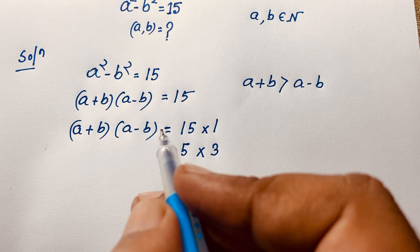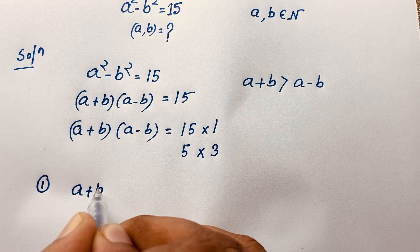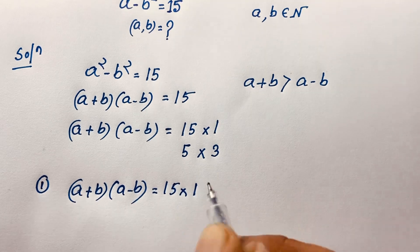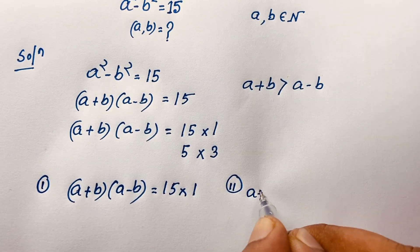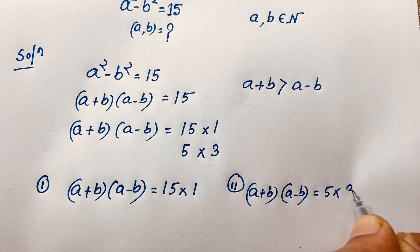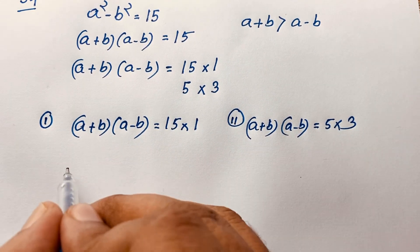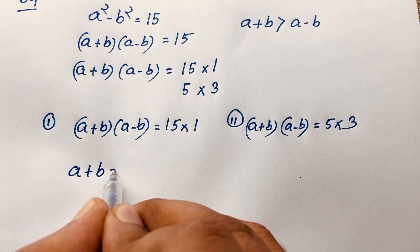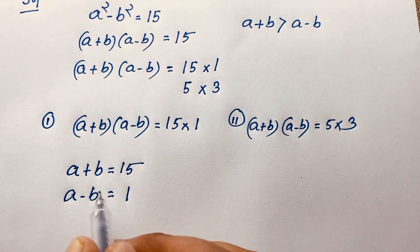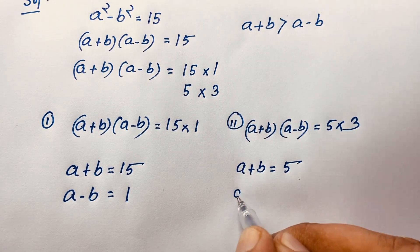So we have two cases. Case 1: (a + b)(a - b) = 15 × 1, giving us a + b = 15 and a - b = 1. Case 2: (a + b)(a - b) = 5 × 3, giving us a + b = 5 and a - b = 3.